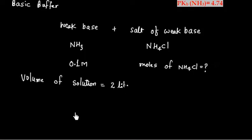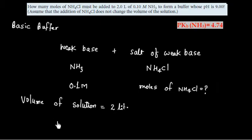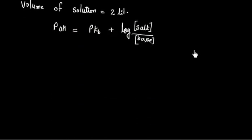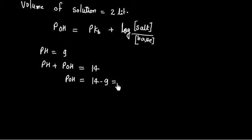Now we will use Henderson-Hasselbalch equation, that is POH equals PKB plus log salt by base. pH is given, pH is 9. So we can calculate POH because pH plus POH is 14. So from here we will have POH equals 14 minus pH. pH is 9 so POH is 5.